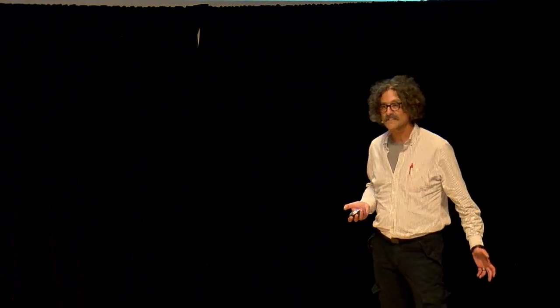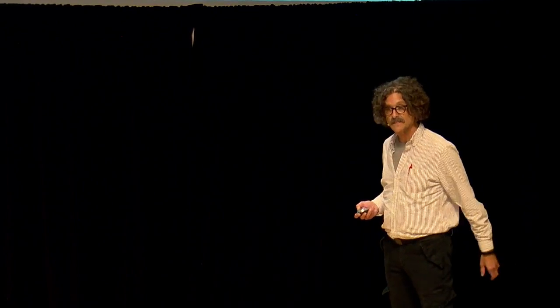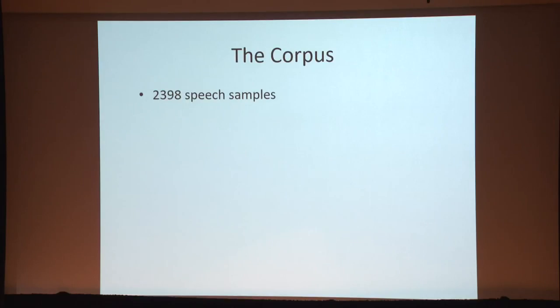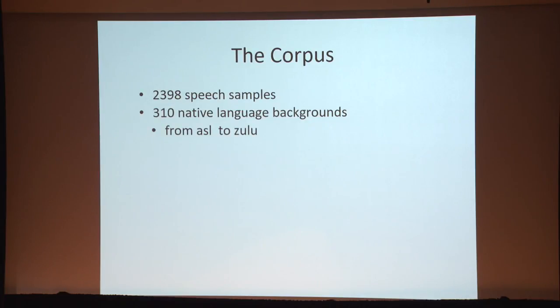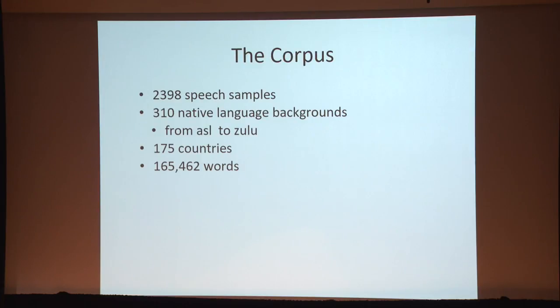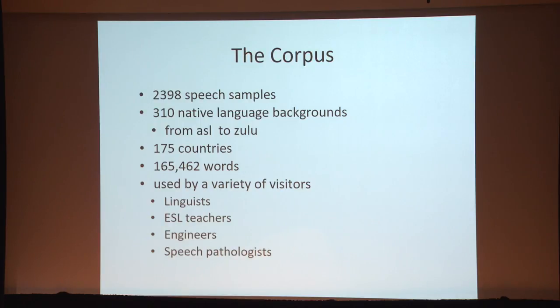What's the purpose of this archive? To demystify and to scientifically study speech accents — English accents, by the way. The database continues to expand. The corpus currently has 2,399 samples, 310 native language backgrounds from ASL to Zulu, 175 countries are represented, and there are 165,460 words at the moment. That's used by a variety of visitors like linguists, ESL teachers, engineers, speech pathologists, actors, and most of the time, people doing drinking games.